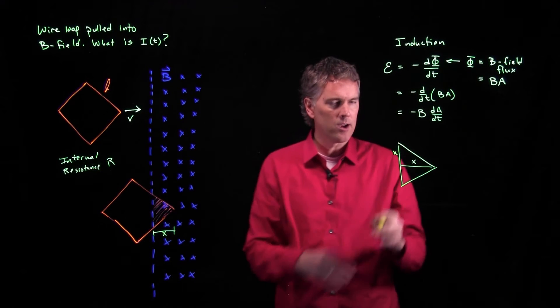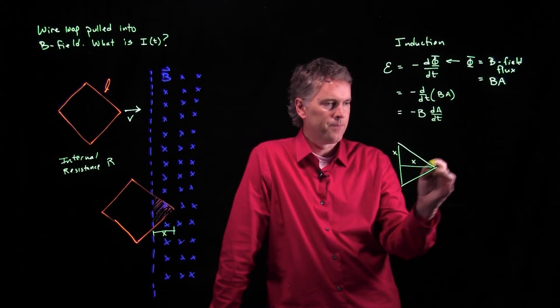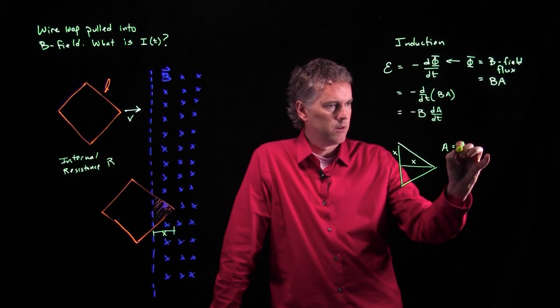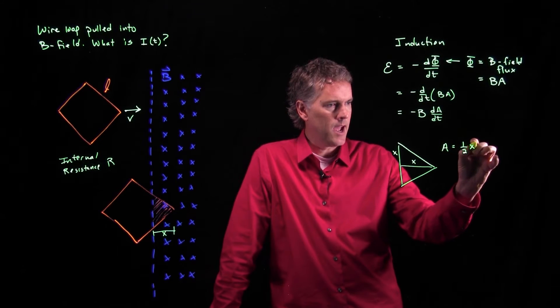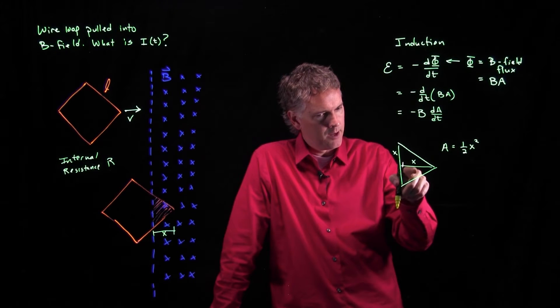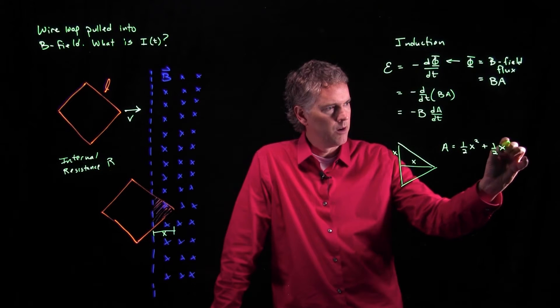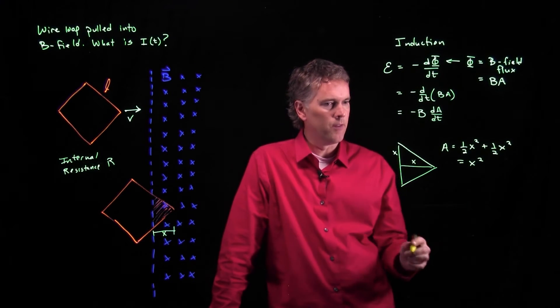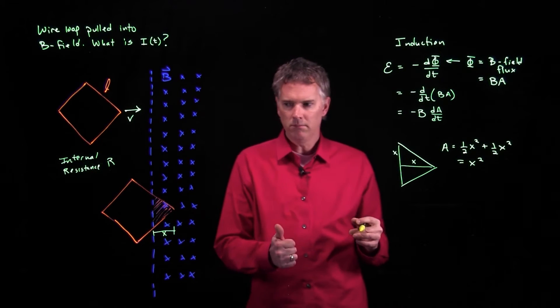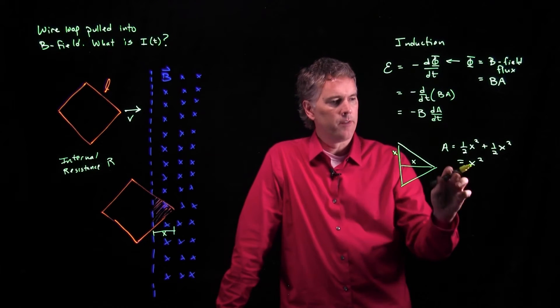So what is the area of this whole thing? Well, the area of this little triangle up here is going to be 1 half the base times the height, which is 1 half x times x. So I get x squared. But the area of this little triangle down here is also 1 half x squared. And so look what I get. I just get the area of this whole thing is x squared. That looks pretty cool.